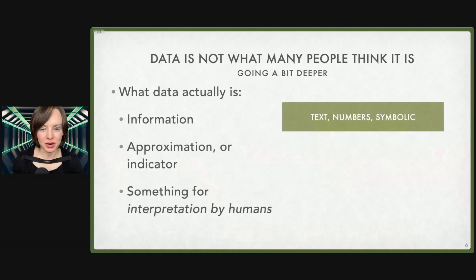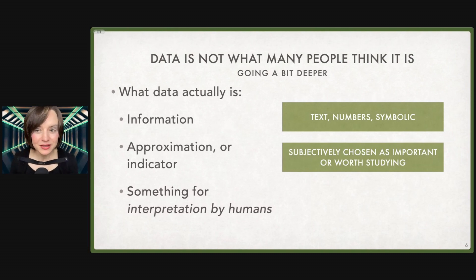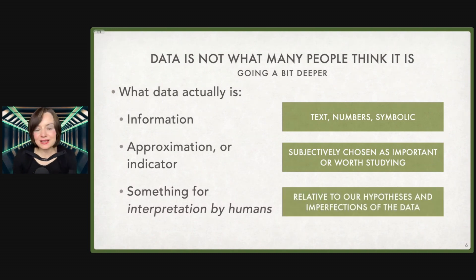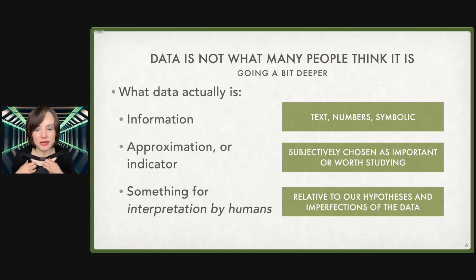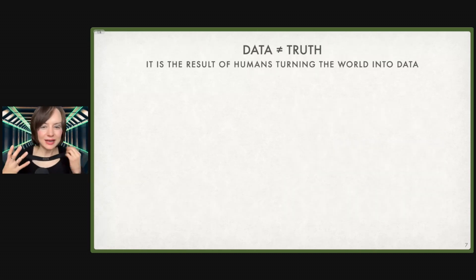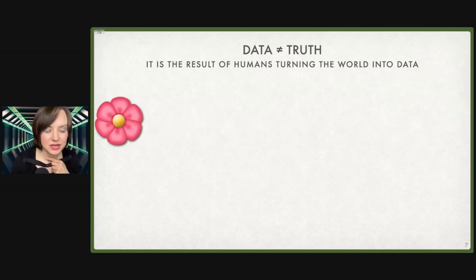Going a little deeper: data can be text, it can be numbers, it can be symbols, images, and so on. It's subjectively chosen as important or worth studying — if we have data on something, it's because we decided it was worth studying that thing. And it's something that we interpret relative to our existing hypotheses, whether formal or informal, stated or unstated, and our understanding of the imperfections of the data. In other words, data is not truth. Data is the result of humans turning truth into a piece of data.